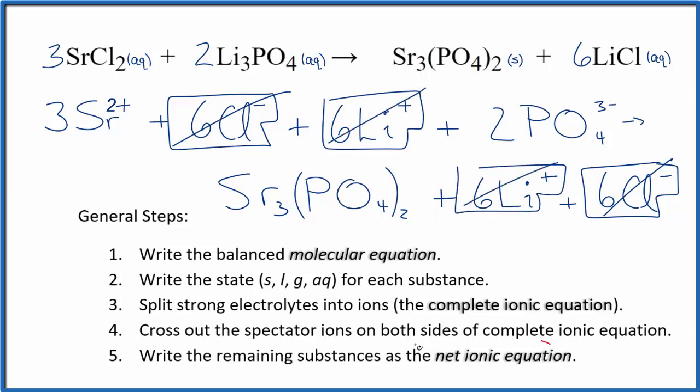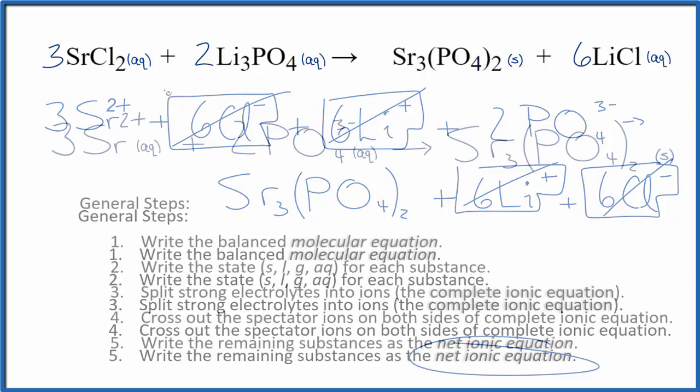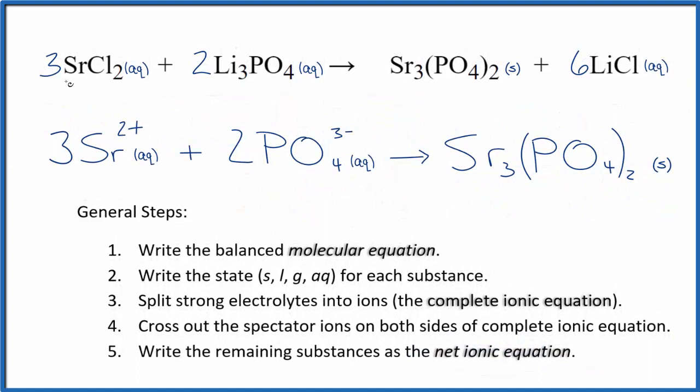But what's left, that's the net ionic equation for SrCl2 plus Li3PO4. I'll clean it up. Write the states. We'll have our net ionic equation. So this is the balanced net ionic equation for strontium chloride plus lithium phosphate.